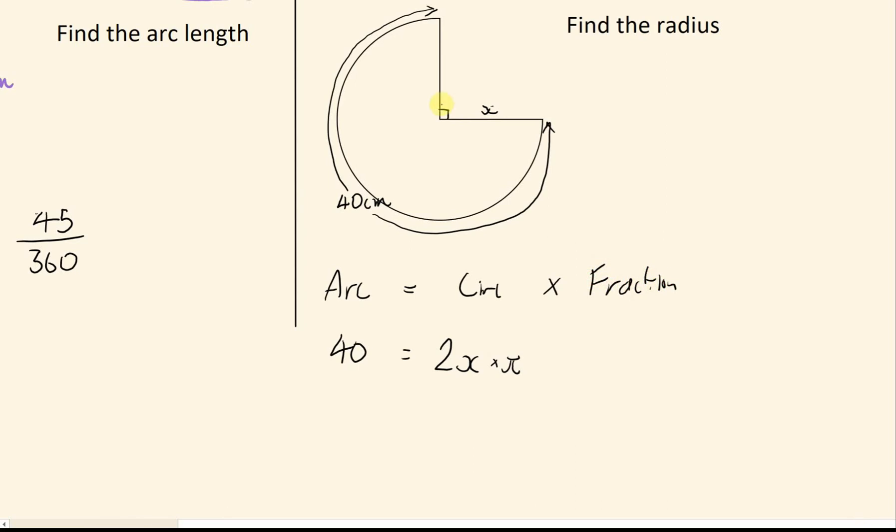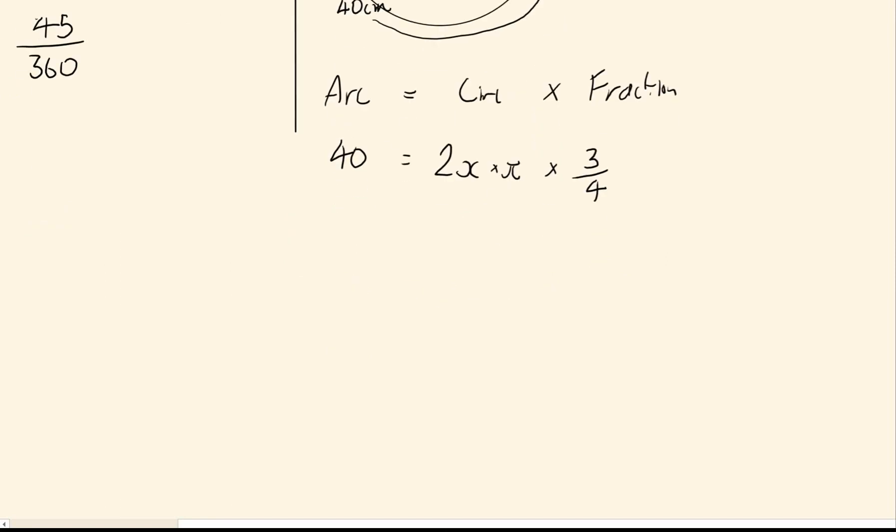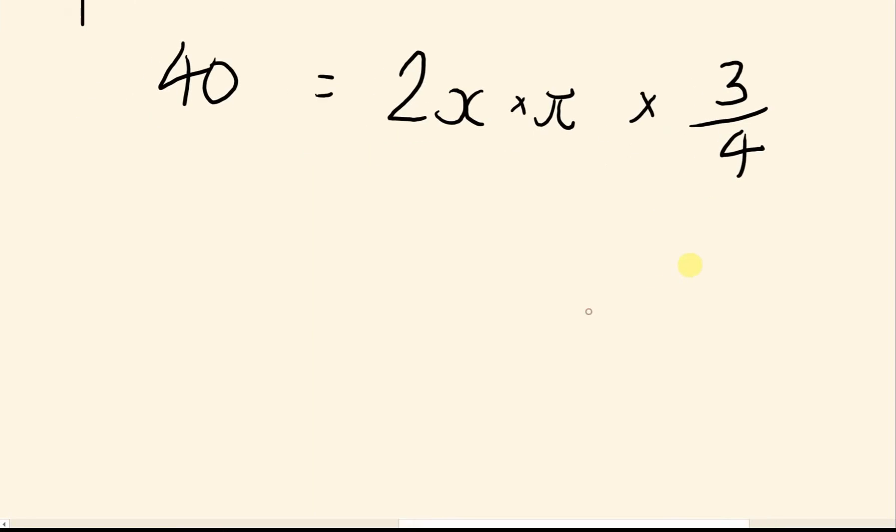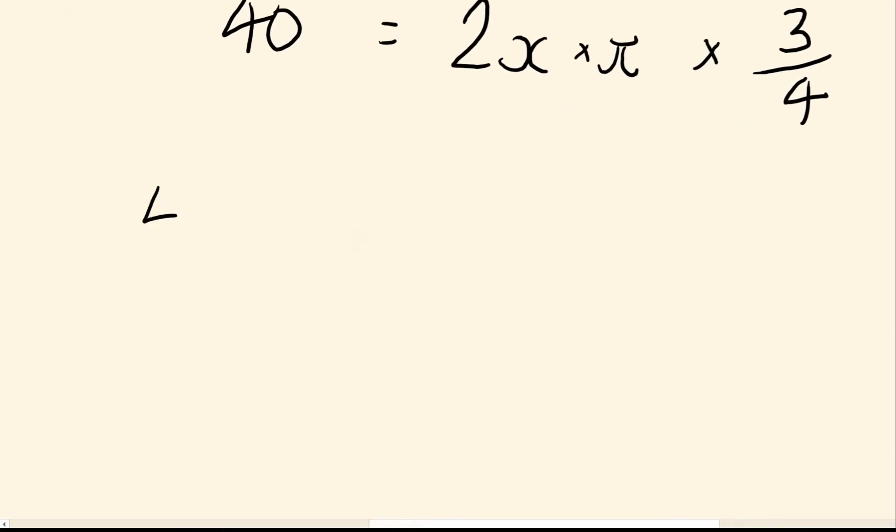And then we need to time this by what fraction of the circle we have. Here we can see that because this cutaway is 90 degrees, that means I am left with 3 quarters of a circle. Now this is just an equation which we can solve to work out x. So we have a bunch of stuff being times by x, and we should know the opposite of times is dividing. So if that was times by x, I'm now going to divide by x, and that will give me x.